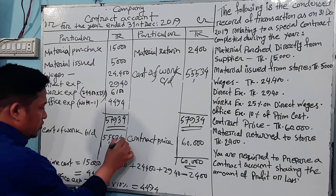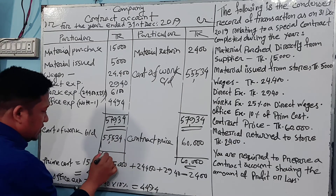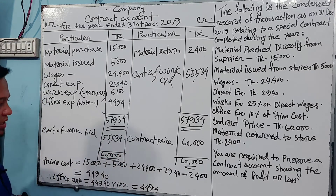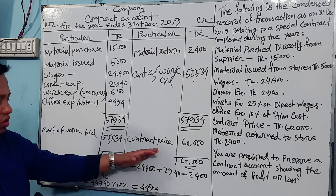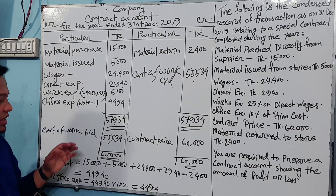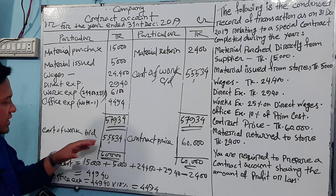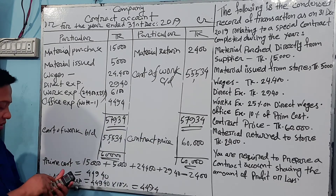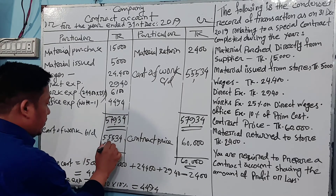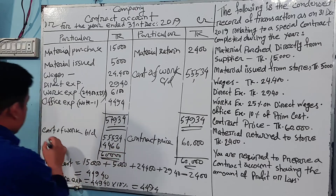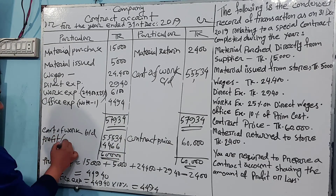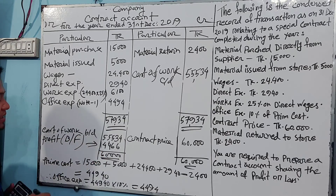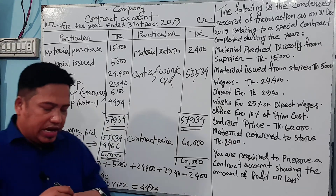The credit side will show the contract price of Taka 60,000. It is less than Taka 60,000 on the other side, so the credit card — the contract price — is Taka 60,000. The balancing figure (BF) is Taka 19,000. This is our contract account, showing the profit.